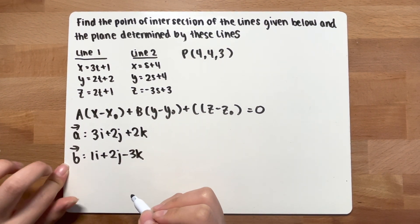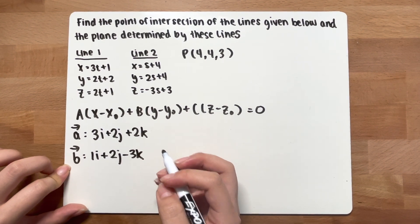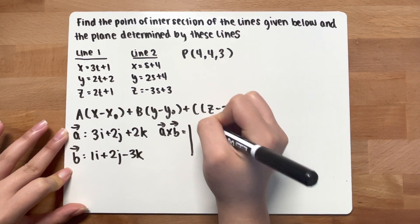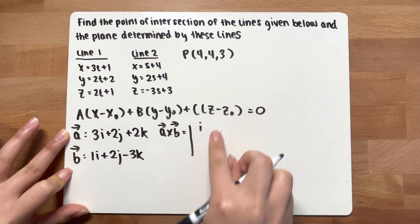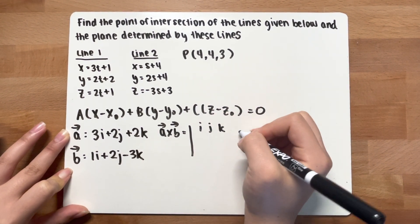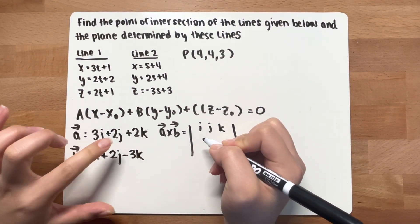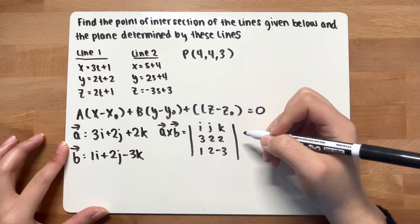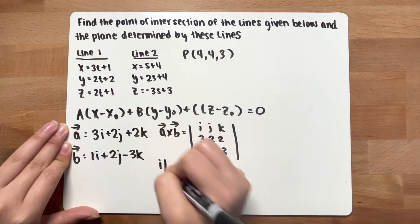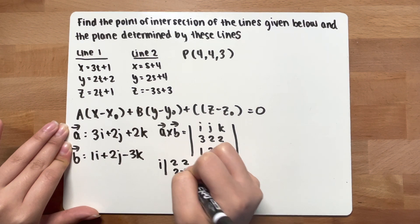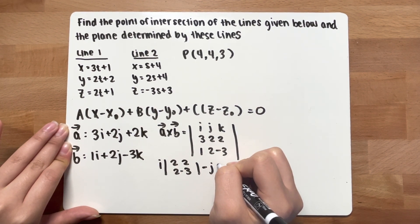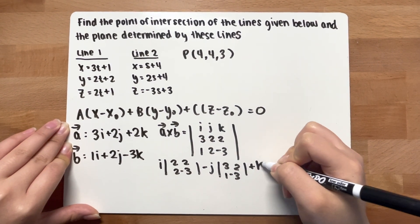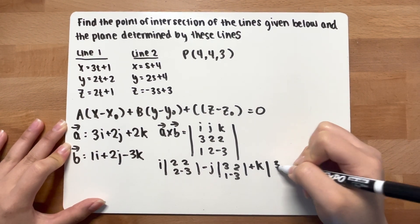Now find the cross product a × b. Set up the determinant with i, j, k in the first row; 3, 2, 2 in the second row; and 1, 2, -3 in the third row. The i-component is (2, 2 / 2, -3), the j-component is -(3, 2 / 1, -3), and the k-component is (3, 2 / 1, 2).